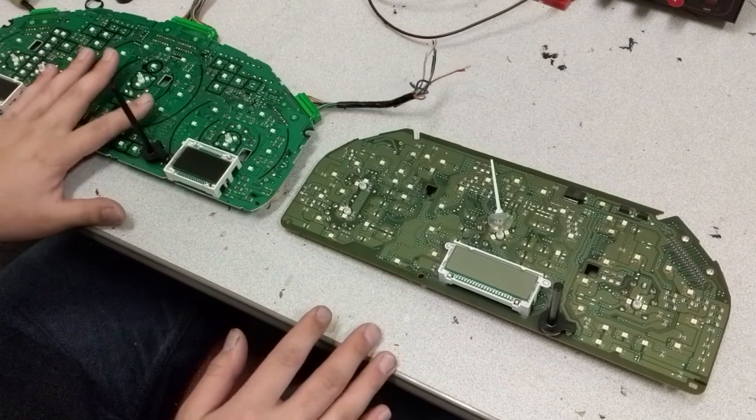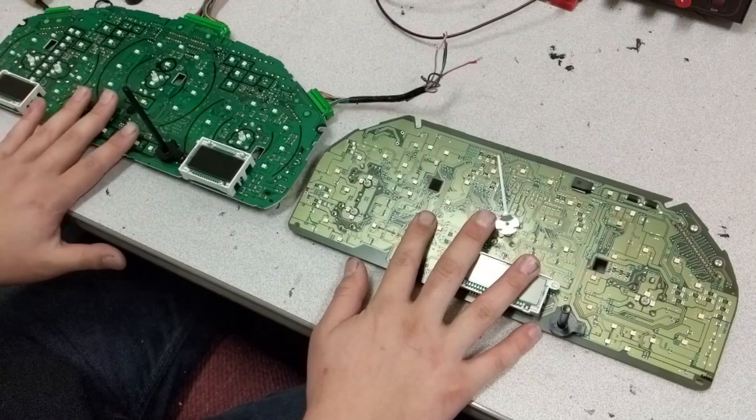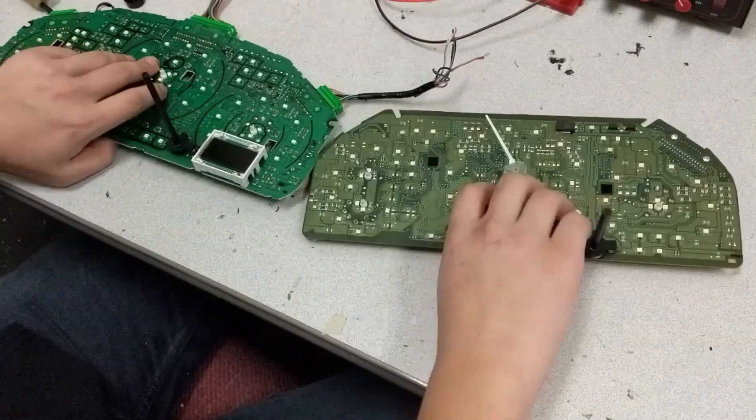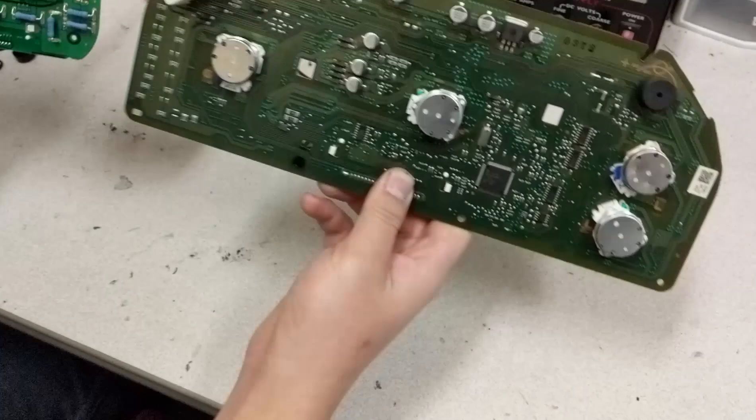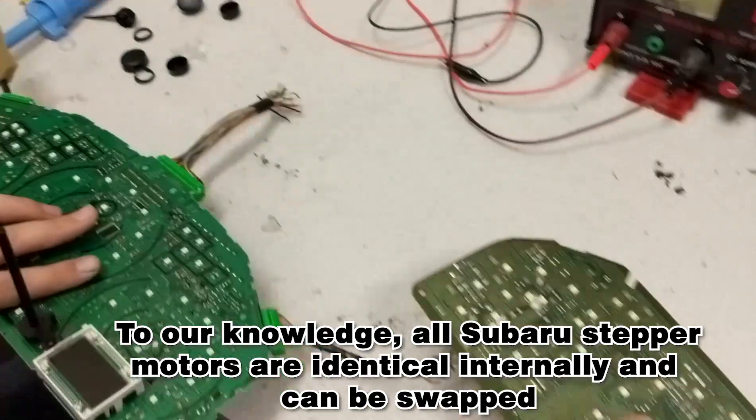So this is a GD STI cluster and then this is a GV WRX cluster, so this is an 08 to 14, this is an 04 to 07 STI. The motors are actually different if you look on the back as far as physical appearance. However, they are internally exactly the same and will swap over with no issues.